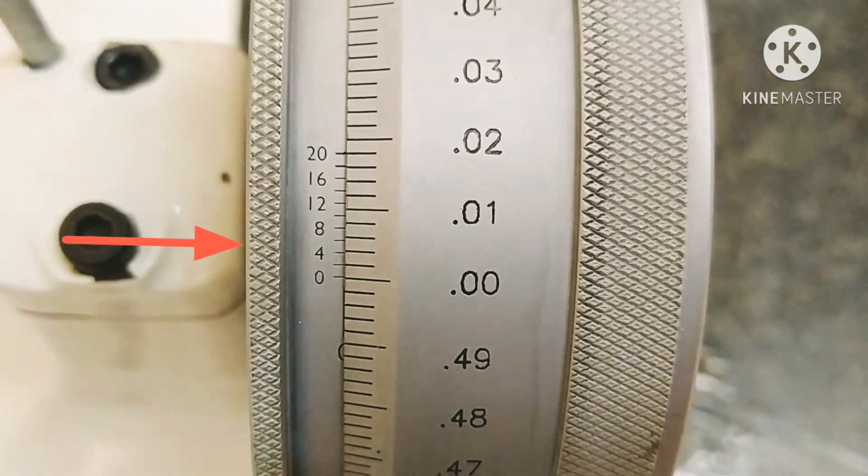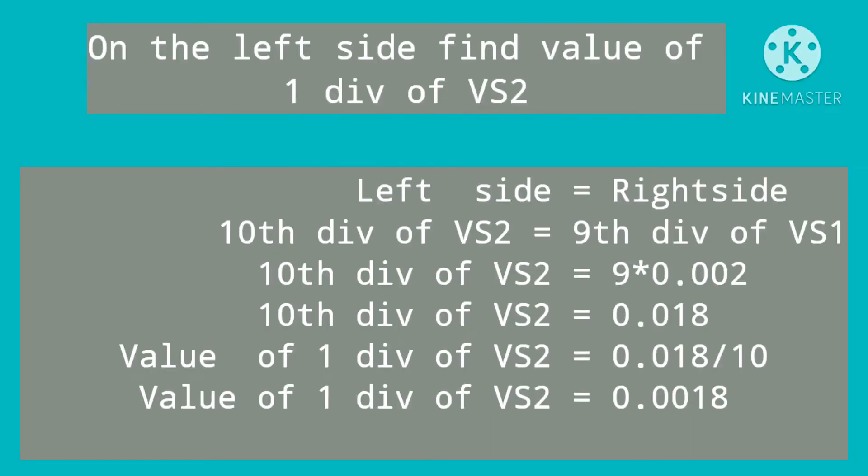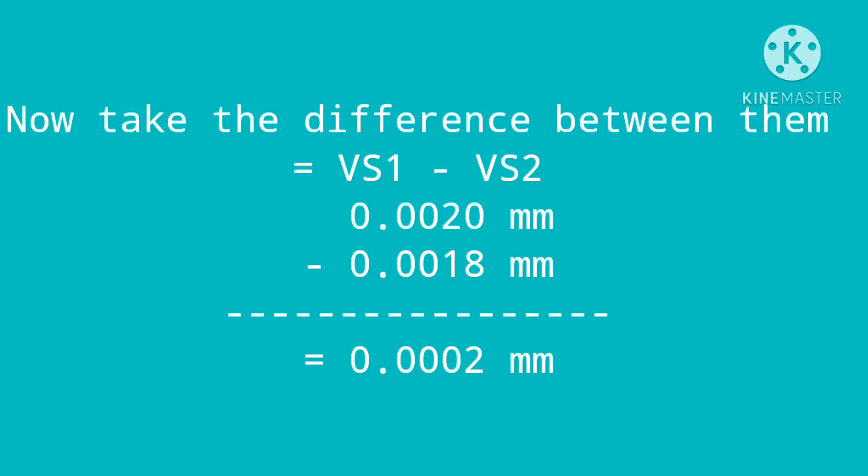It is very interesting to find the value of one division of vernier scale 2. The answer would be 1/10 times 0.018, which becomes 0.0018. Now take the difference between them: vernier scale 1 least count is 0.002 mm minus vernier scale 2 least count 0.0018 mm, so the answer is 0.0002 mm. In this way, the least count is greatly reduced to 0.0002 mm.